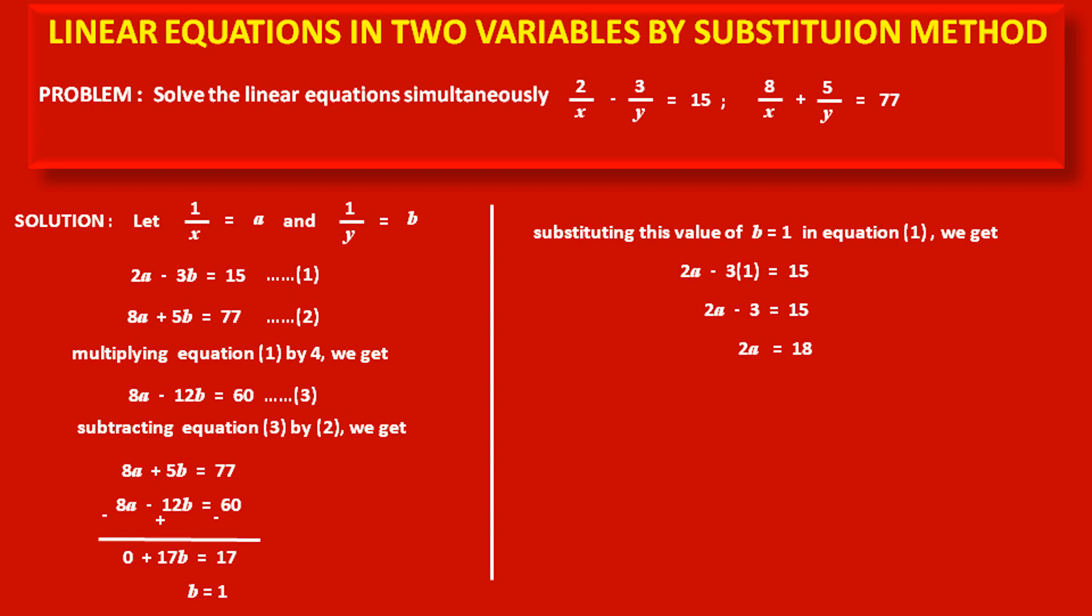Adding 3 to both sides: 2a = 18. Dividing both sides by 2: a = 9.